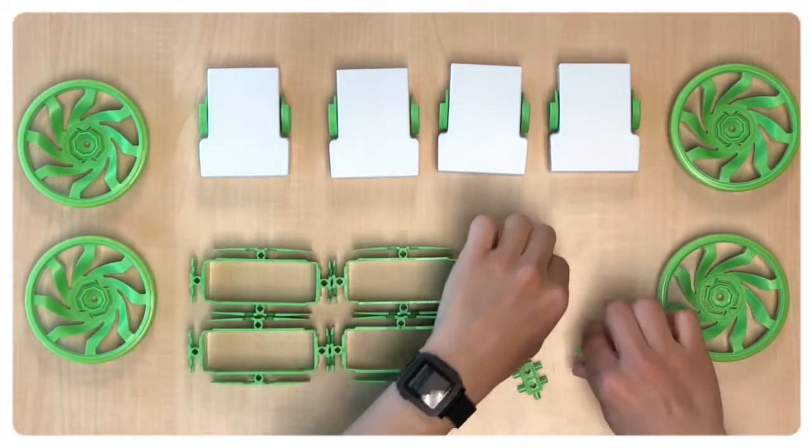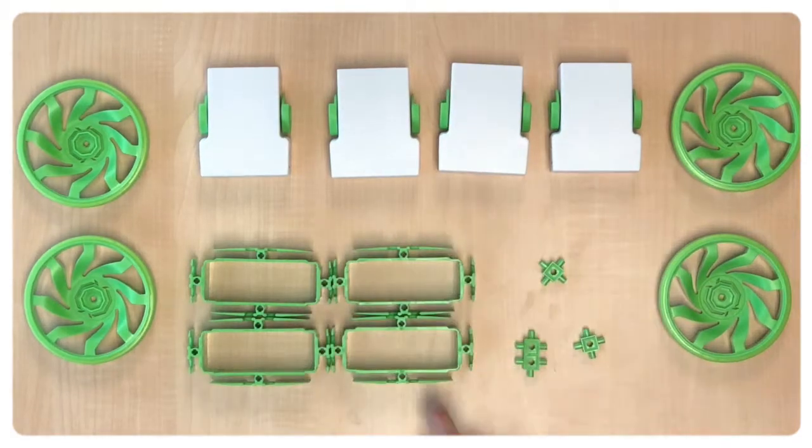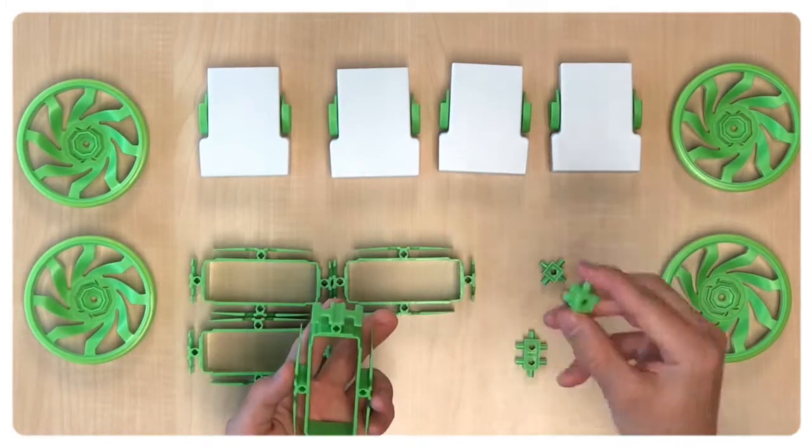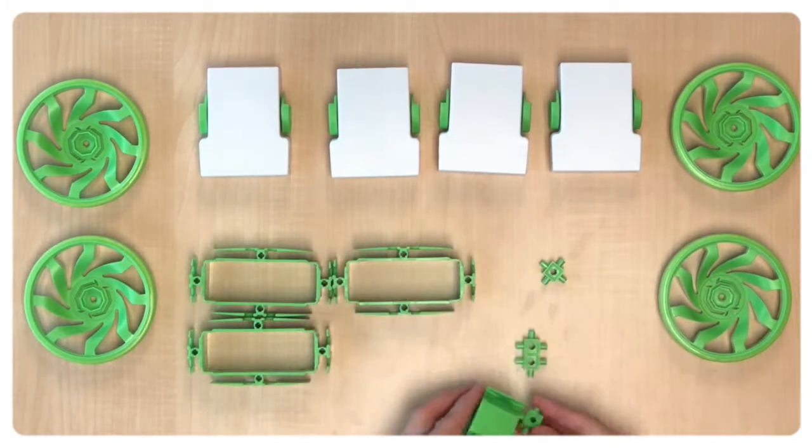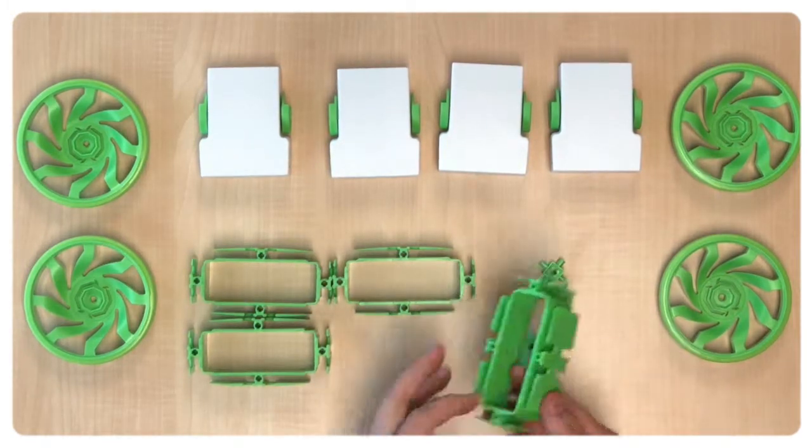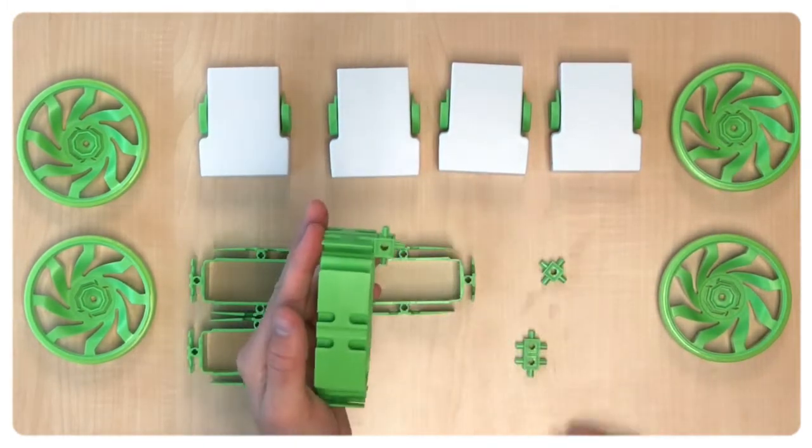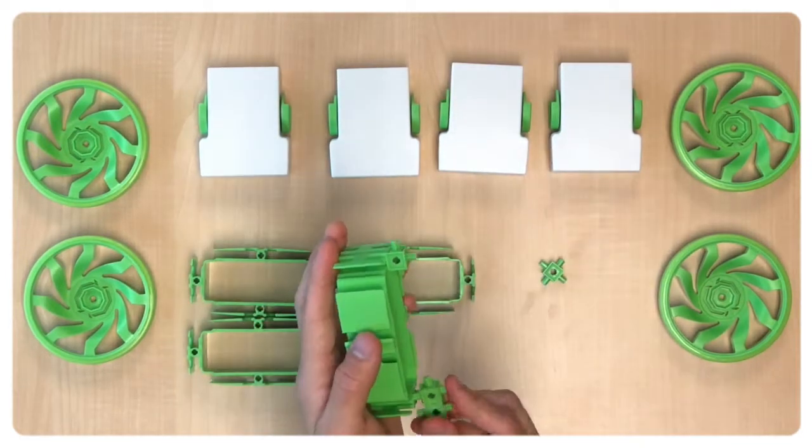What we want to do first is get the jackets and put them together using the four sides and the six side connector as can be seen here in the video. We attach on one side the four side connector and on the other side the six side connector.